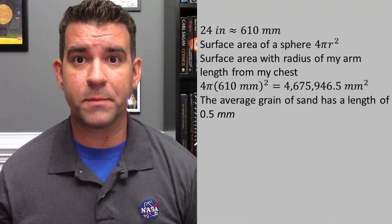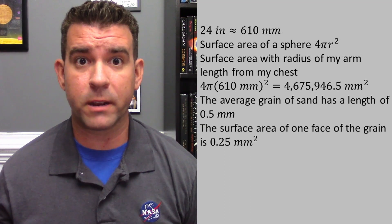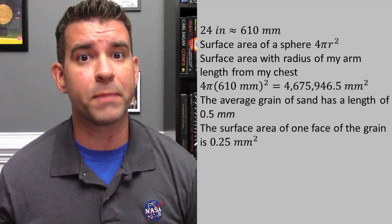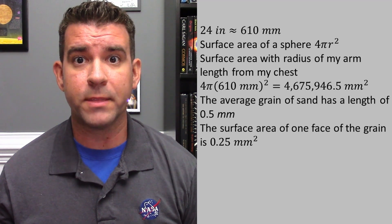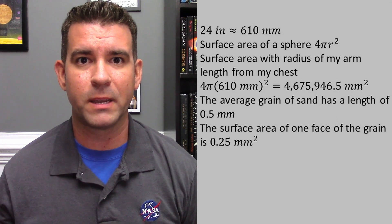I know, it's killing me not to use freedom units for this. The average diameter of a grain of sand is 0.5 millimeters. Taking the surface area of one face of the grain of sand and dividing it by the surface area of the sphere made by my arm gives us an amazing approximation: if this photo is the size of a grain of sand held at arm's length, this image is only 0.0000000053565111% of the observable universe.